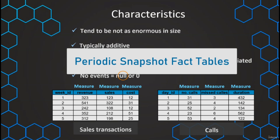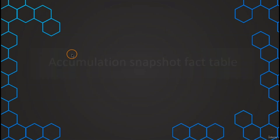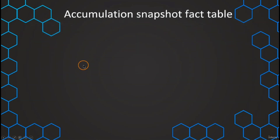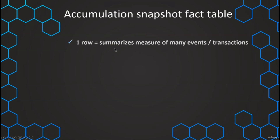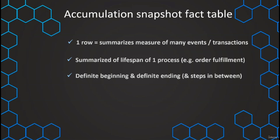Now let's talk about the third and last type: the accumulating snapshot fact table. This is a little bit similar to the periodic snapshot, except that one row is defined by the summarization of a measurement of many events where the period is not standardized — it is defined by the lifespan of one process. For example, one order fulfillment or any other process that has a specific beginning and a specific ending.